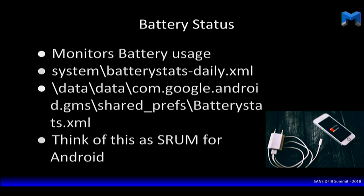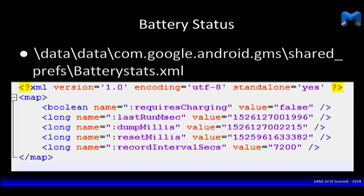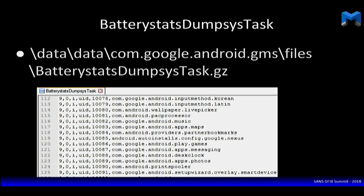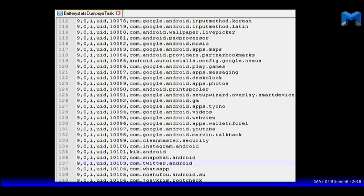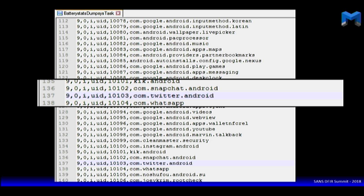Speaking of battery timestamps, I love battery stats dumpsys. It's a really long name, but there's something really important in here. You get UIDs and package names — these UIDs are gold because you're going to use them to correlate everything. You have a list of all the applications with their UIDs. These UIDs follow throughout the system, and it's really interesting because they're only five digits, which is unusual for unique identifiers.